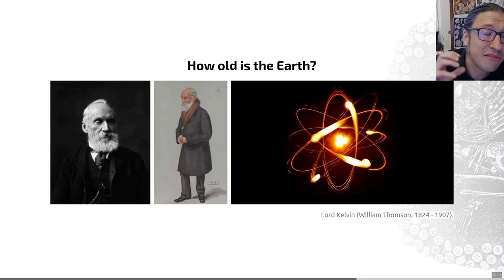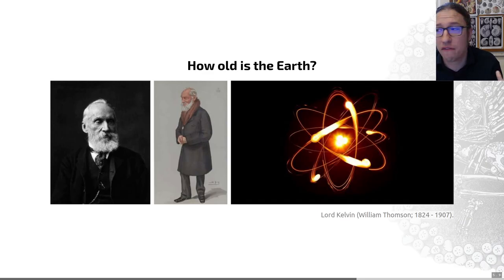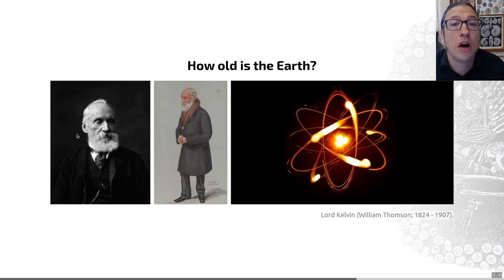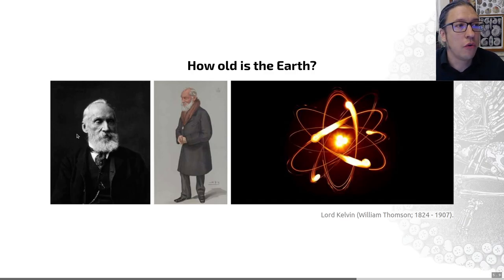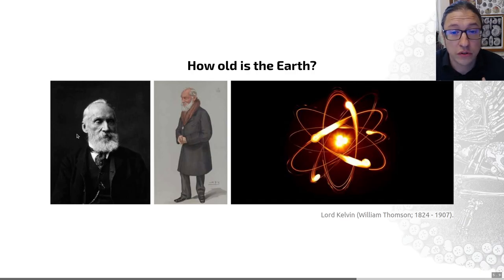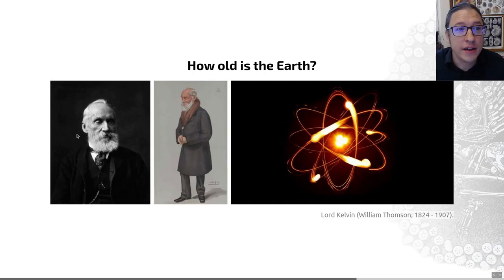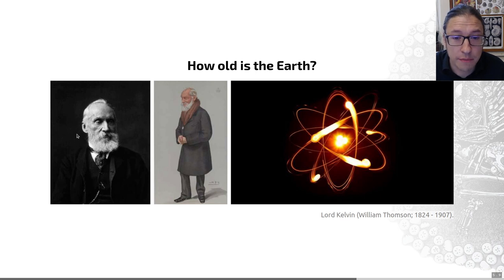We know now that he was quite far out in that estimate — radioactivity exists, and the Earth has been kept warmer than otherwise expected by the gradual decay of radioactive elements. Nevertheless, this gave us the idea of a very old Earth over which evolution and the laws of geology could play out, and that further allowed many ideas of uniformitarianism — except not in incredibly strict ways — to be accepted as fact.